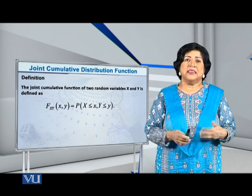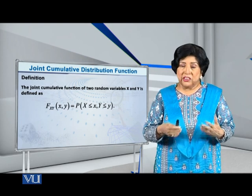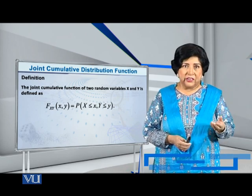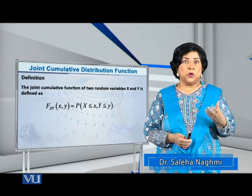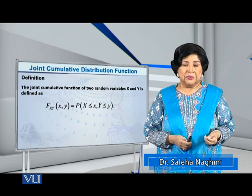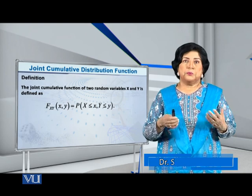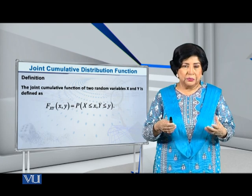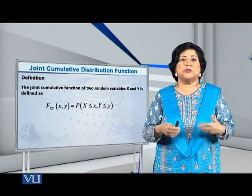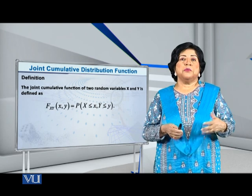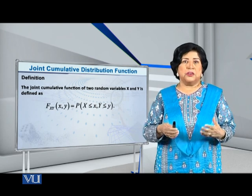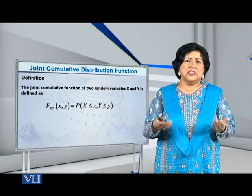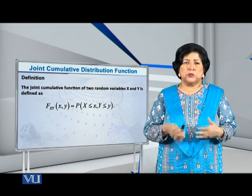So let me take a simple case when we have only two random variables X and Y, and in this case the joint CDF is given by capital F of the random vector XY at the point small x small y, which is equal to the probability that the random variable capital X is less than or equal to small x and the random variable capital Y is less than or equal to small y. Now this is a basic definition and you have already taken it up.